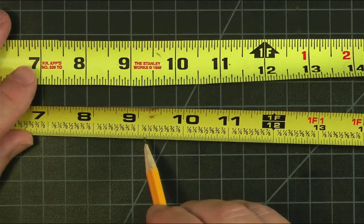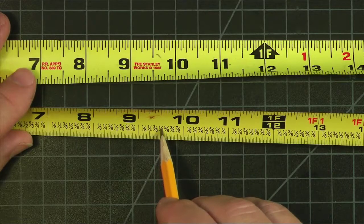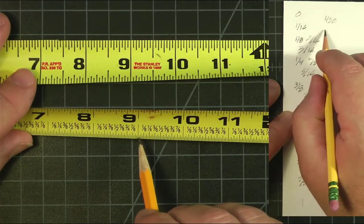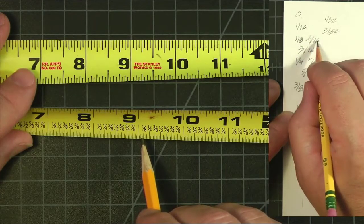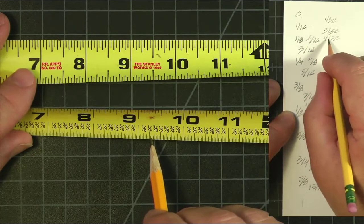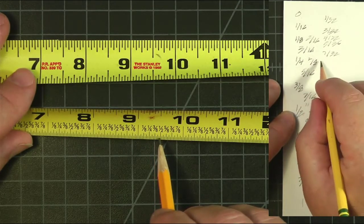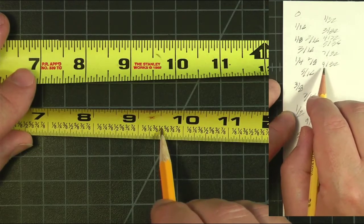So here we're seeing that we have 1/8, 1 quarter, 3/8, 1 half, and so on. Here we have 1/16 and 3/16. Here we have 1/32, 3/32, 5, 7, 9, 11, 13, 15/32, which means that 16/32 is the same as half an inch.